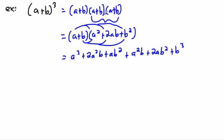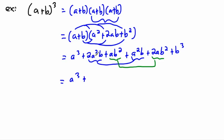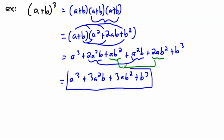This is really ugly. Can we combine anything? Yes — 2a squared b combines with the other a squared b to give 3a squared b, and ab squared combines with 2ab squared to give 3ab squared. So the final answer is a cubed plus 3a squared b plus 3ab squared plus b cubed. You can see why this is getting annoying.